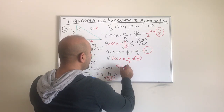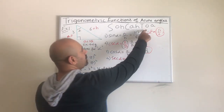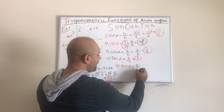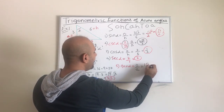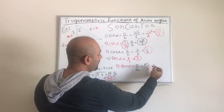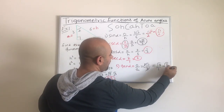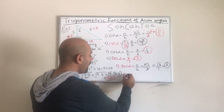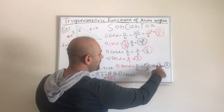The fifth one is tangent. One way to find it is to use opposite over adjacent. Opposite is 3 radical 3 and adjacent is 3. The 3's cancel, leaving radical 3 over 1, or simply radical 3. That is the tangent of alpha.